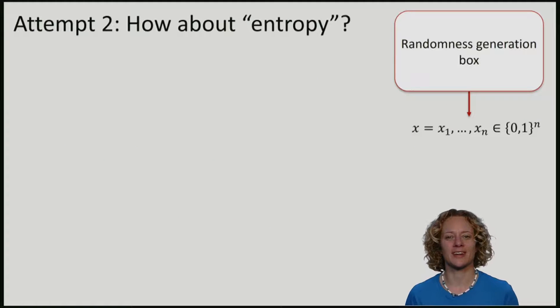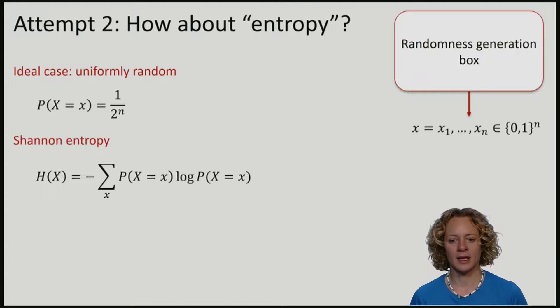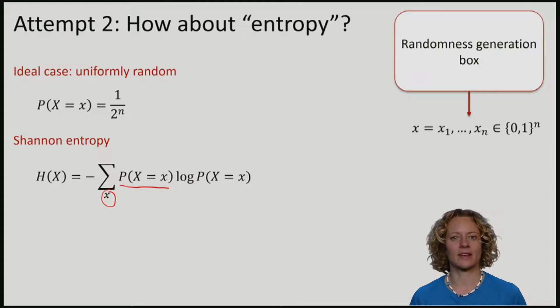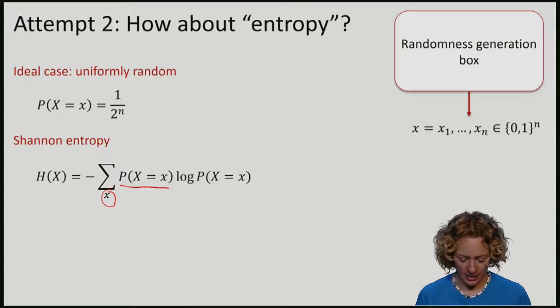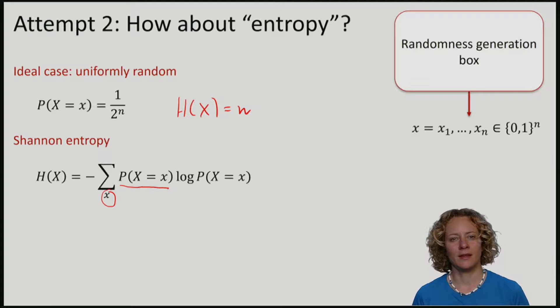Possibly if you come from classical computer science, or also if you come from physics, you might have heard about something called entropy. The entropy that you may be familiar with is called the Shannon entropy. This entropy is defined as follows. We have minus the sum over all possible strings x, probability of the string x, log probability of x. So basically we are averaging over minus the log probability of x. For the ideal case, where all strings are equally likely, this entropy is equal to n. So maybe this entropy is a good measure to quantify randomness.